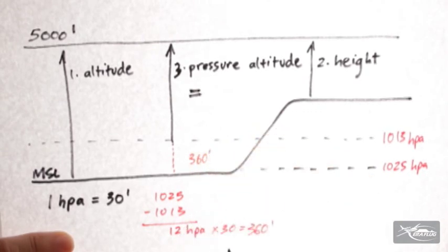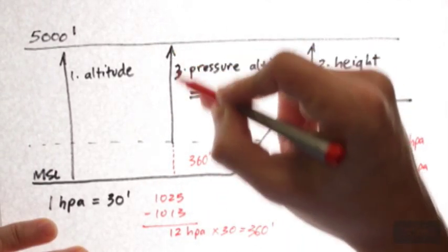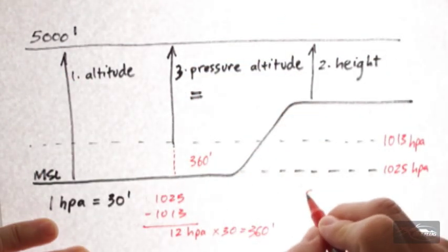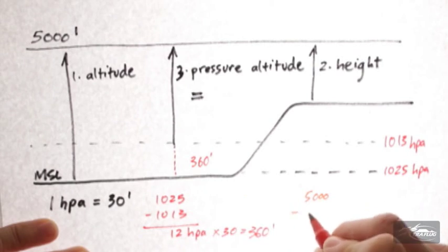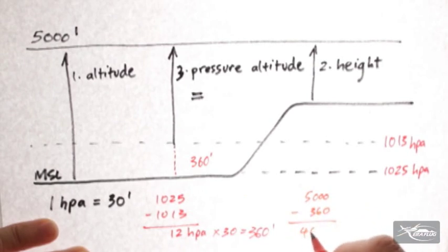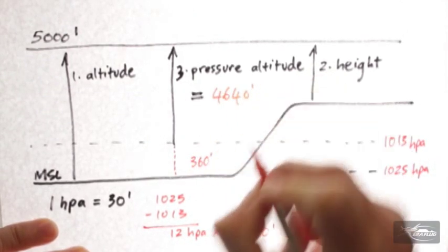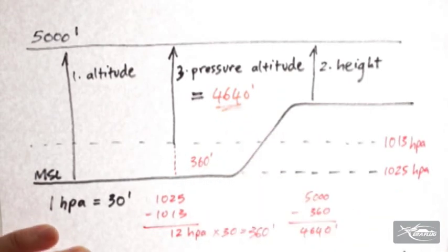In order to get the answer of what the actual pressure altitude of this place is, we need to subtract, obviously, our 5,000 feet minus the 360, and we'll get an answer of 4,640 feet. So our pressure altitude is 4,640 feet.